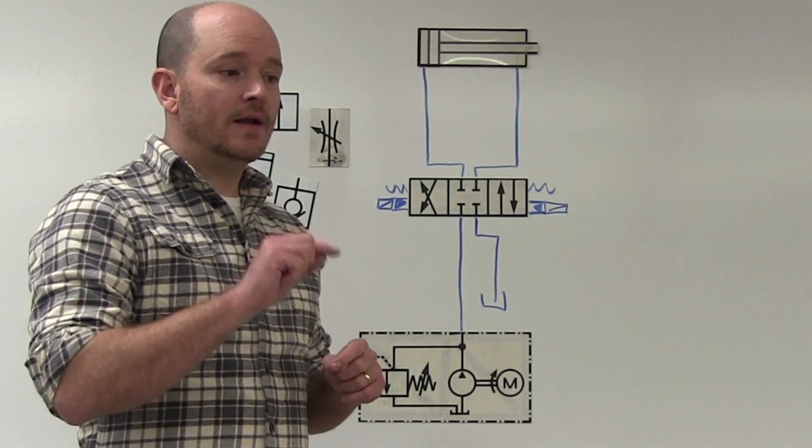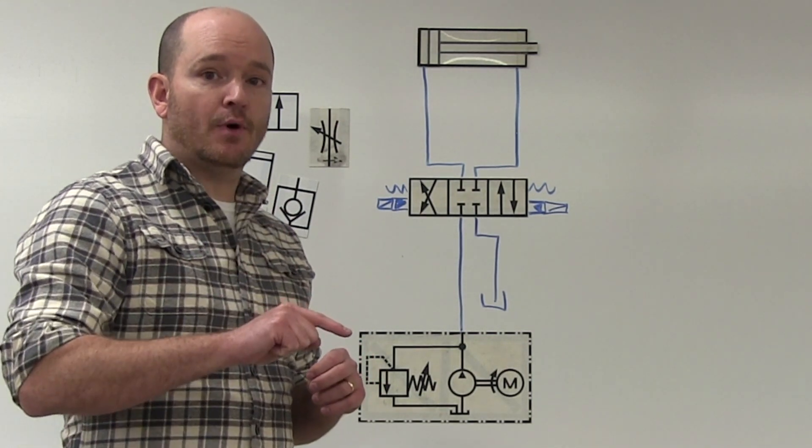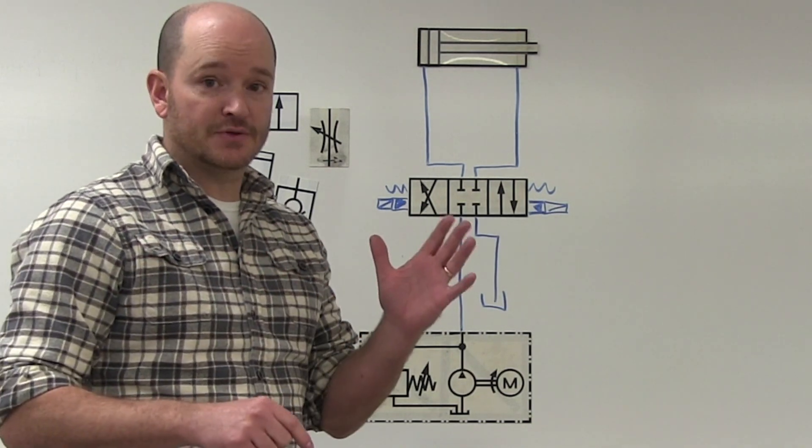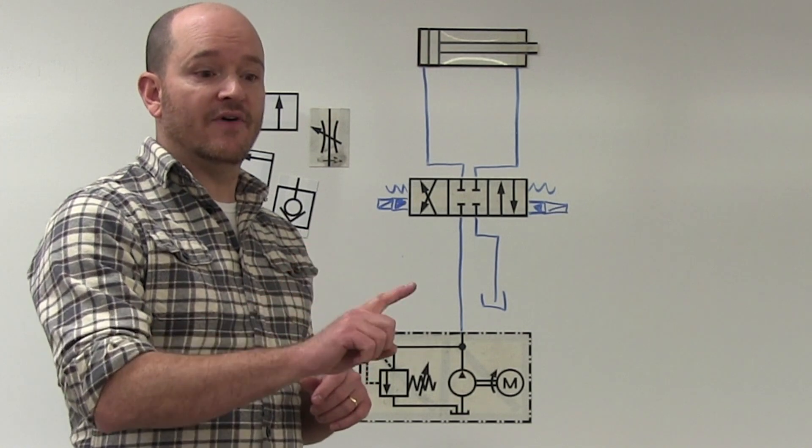But really, when and where we use a bypass check valve in a hydraulic system is based upon where the devices are going to be placed 90% of the time. 10% of the time, it's about the internal workings of the device itself.